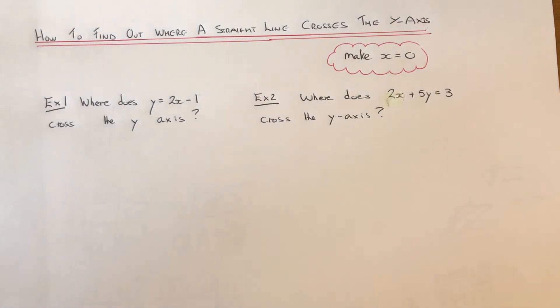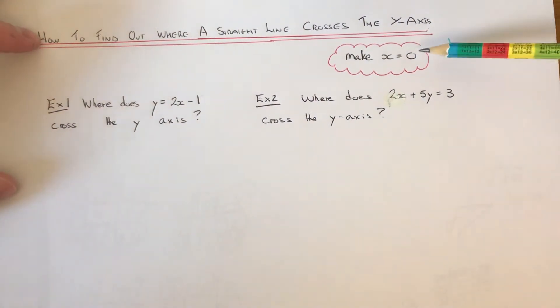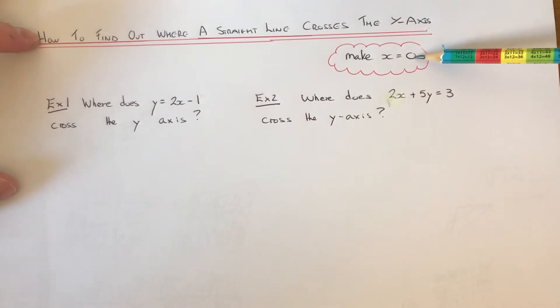Hi guys, welcome back. Today I'm going to show you how to find out where a straight line graph crosses the y-axis. So to do this we just need to make x equals 0 in our equation and then just solve it to give you the y-coordinate.